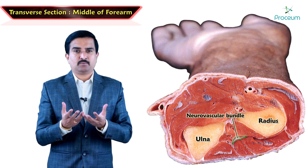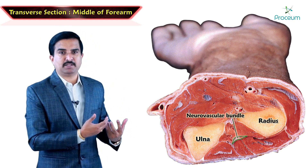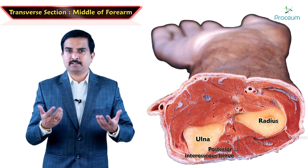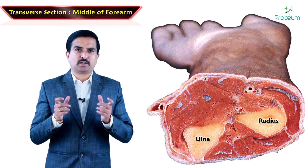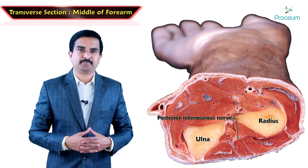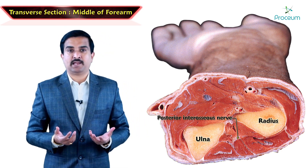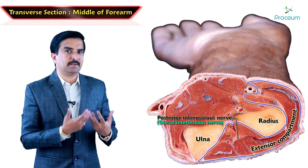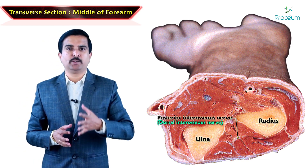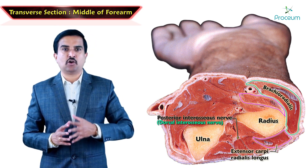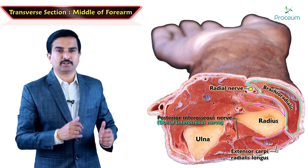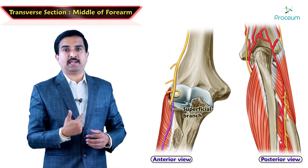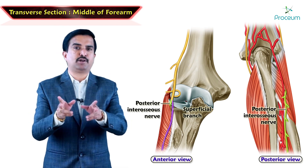There is a neurovascular bundle in the posterior compartment as well, in the fascial plane between the superficial and deep muscles, which mainly consists of the posterior interosseous nerve and posterior interosseous artery. The posterior interosseous nerve — otherwise called the dorsal interosseous nerve — is the nerve of the extensor compartment of the forearm. It supplies most of the muscles in the posterior compartment except anconeus, brachioradialis, and extensor carpi radialis longus, which are innervated by the radial nerve. It is the continuation of the deep branch of the radial nerve, and the superficial branch and the posterior interosseous nerve are the two terminal branches of the radial nerve.